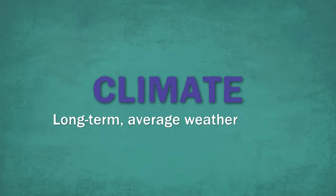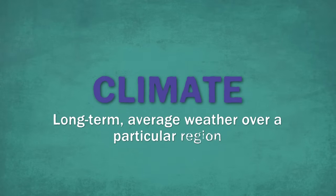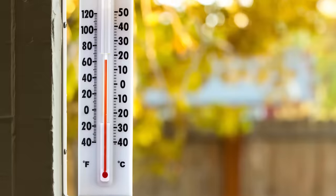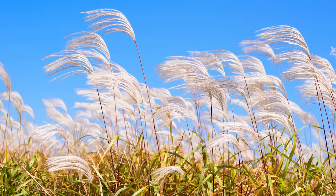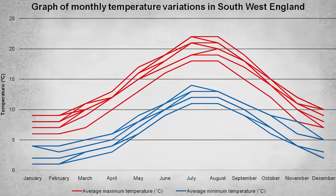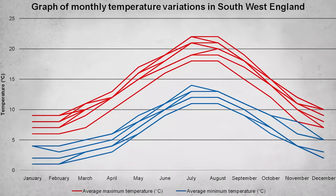Climate is the long-term average weather over a particular region. It's the typical patterns of temperature, precipitation, wind, and how those change seasonally throughout the year. But what does that actually mean?